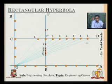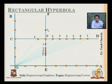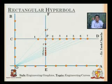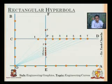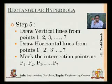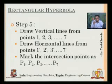My next step is to draw vertical lines through points 1, 2, 3, 4, 5, 6, and 7. From point one I draw upwards because that point is above, and from the rest I draw downwards. Then I draw horizontal lines through points 1', 2', 3', 4', 5', 6', and 7'. We'll mark the intersection points as P1, P2, P3, P4, P5, P6, and P7.